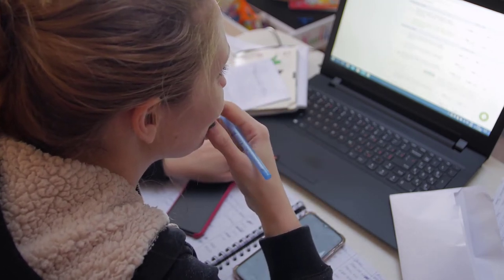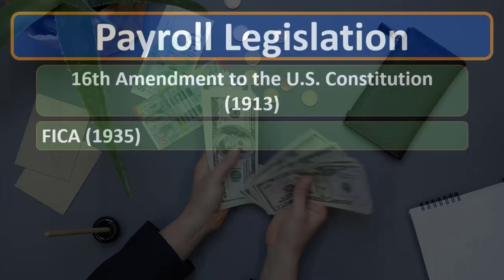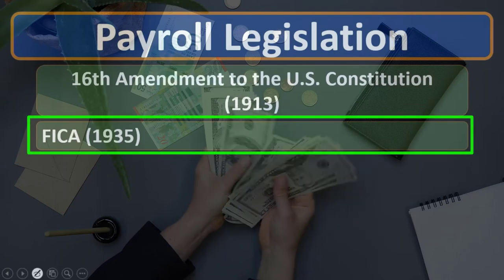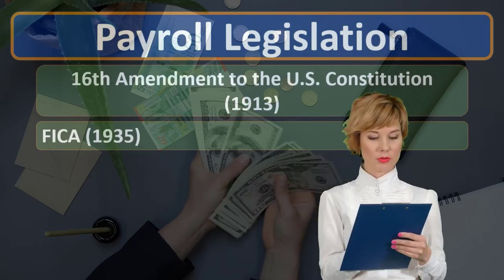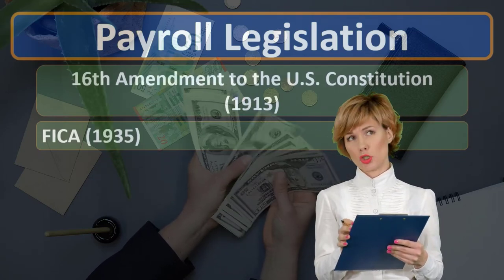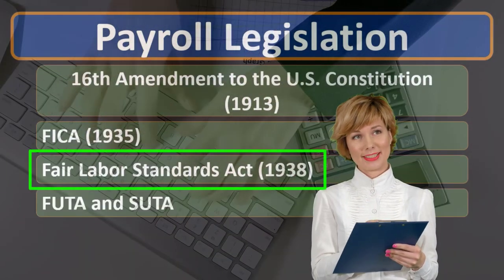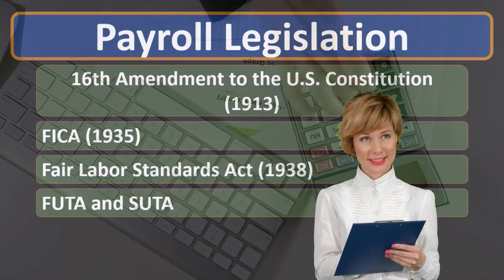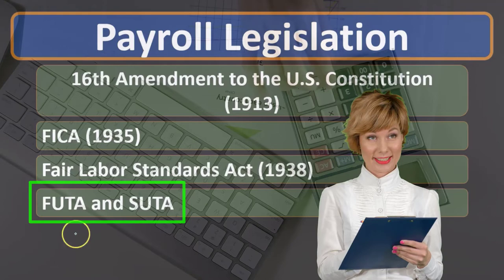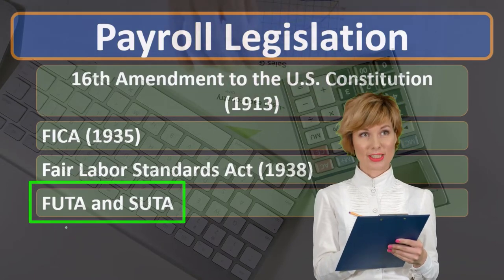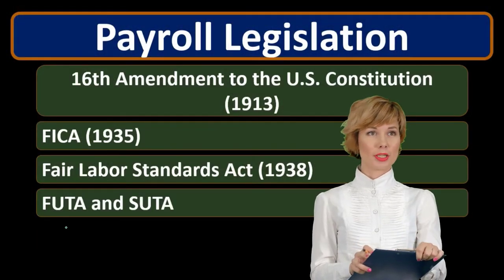We had a lot of laws in the 1930s that dealt with payroll or payroll-related issues, including FICA of 1935 — the Federal Insurance Contributions Act. We'll talk more about FICA because it's going to be a major component of payroll taxes. We also have the Fair Labor Standards Act of 1938, and FUTA and SUTA — federal unemployment tax and state unemployment. The federal and state unemployment taxes are things the employer will have to withhold, so we'll deal with those when we do our calculations.